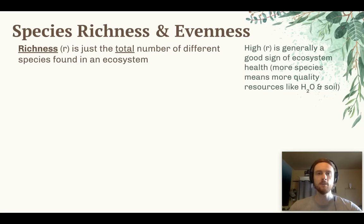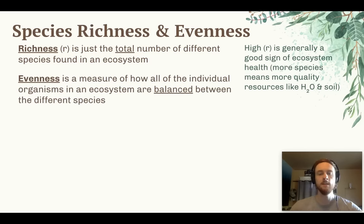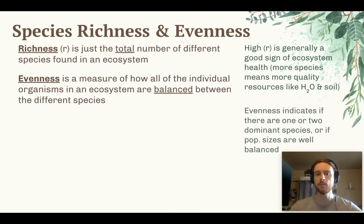Generally, the higher the species richness, the healthier an ecosystem is. That's because the more species that can be supported is generally an indicator of quality resources in that ecosystem, such as clean water or nutrient-rich soil. But richness doesn't give us the entire picture — we also want to look at species evenness, which is a measure of how well all individuals are distributed between the different species present.